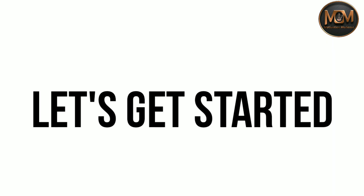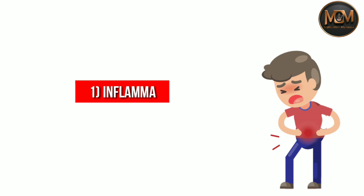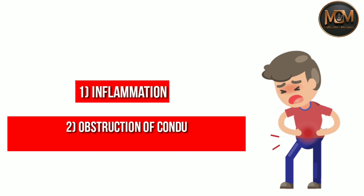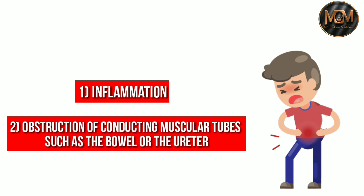It's very important to know that when you feel pain in the abdomen, it may happen because of two reasons. The first one is inflammation, and the other one is obstruction of conducting muscular tubes such as the bowel or the ureter.